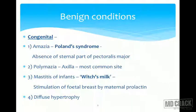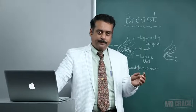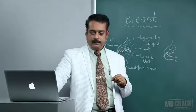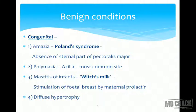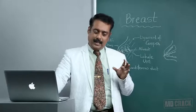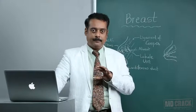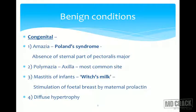We now move on to other benign conditions — congenital and acquired. Starting with congenital conditions, these vary in number of structures, internal changes, and various other abnormalities. First is amazia — the absence of the entire breast from the chest wall — seen either in isolation (unilateral) or very rarely bilateral. When bilateral, we call it Poland's syndrome, which means amazia plus absence of the sternal portion of pectoralis major muscle.